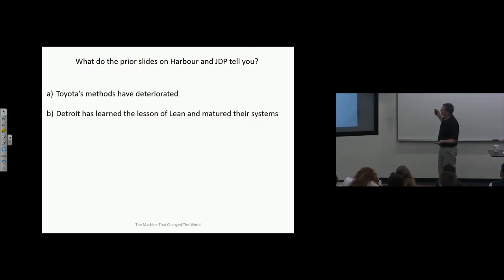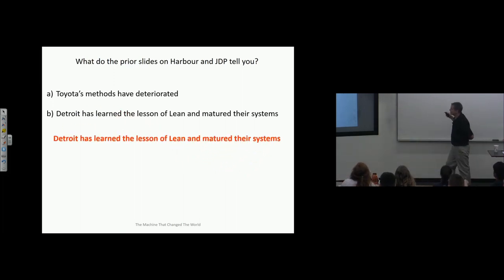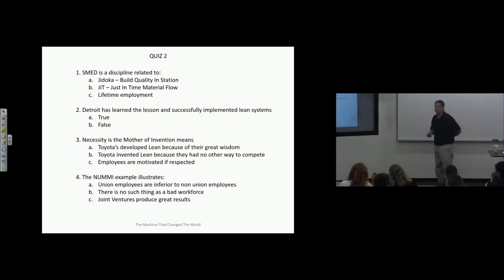Okay, Toyota's methods have deteriorated. But what do the slides on Harbor tell you? Toyota's methods have deteriorated. Detroit learned the lesson of lean and matured their systems. Detroit has learned the lessons of lean and matured their systems. That's what it tells you. This is not the quiz. I'm sorry. I formed that in the wrong way. So that's the point. Detroit, thank God, has learned their lesson. All right. Okay, questions? Okay.